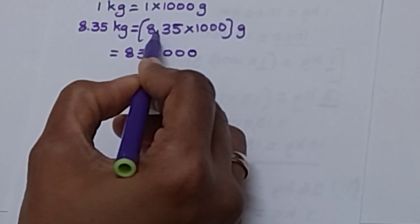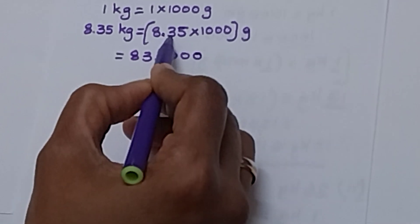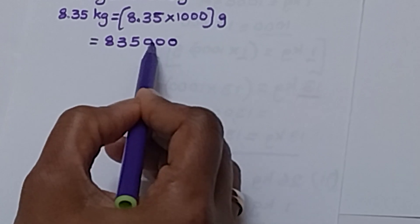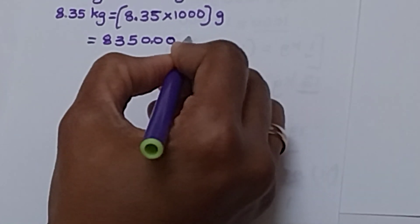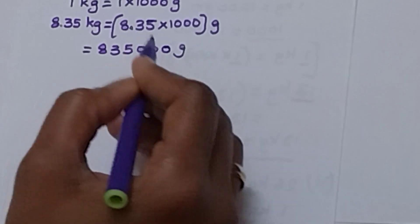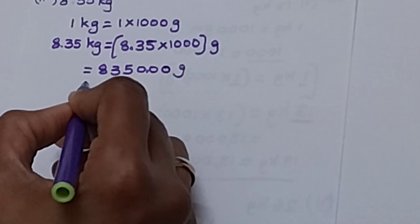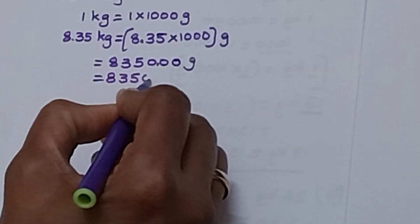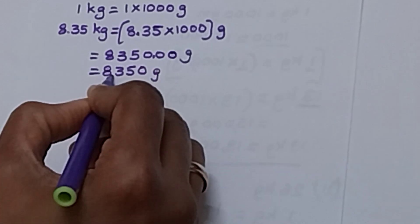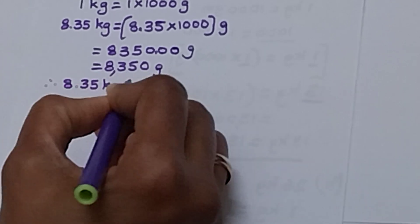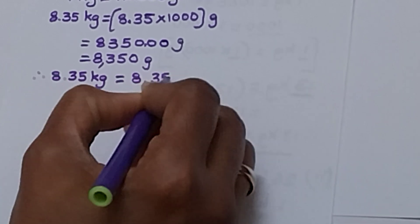Now we think about the decimal. After the decimal in 8.35, there are 2 digits. So we have to place the decimal after 2 digits from the right side — that is position 1, 2. After 2 digits, we put the decimal. After the decimal, there are no digits other than zeros, so we can ignore that decimal. We just write 8, 3, 5, 0 — that is 8,350 grams. Therefore, 8.35 kilograms equals to 8,350 grams.